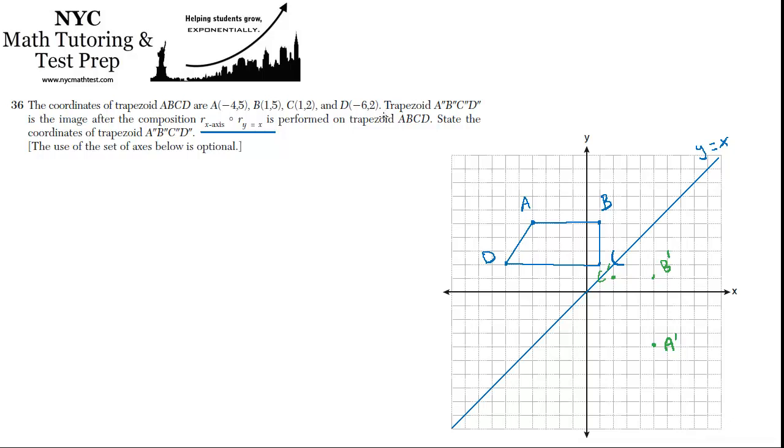D is at negative 6, 2. So it's going to end up at 2, negative 6, which is here. We can draw that trapezoid as well. That should look right to you. Doesn't that look like it's the exact same trapezoid, and it's just been reflected about the line y equals x? Looks pretty good to me.